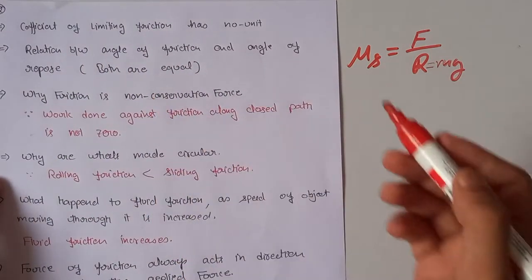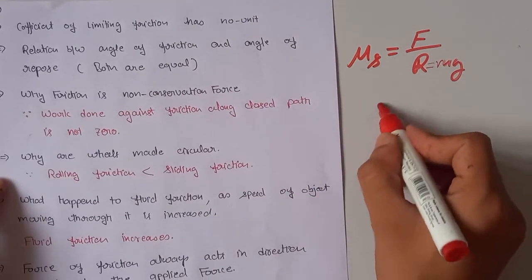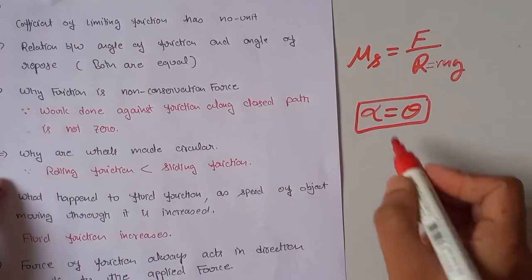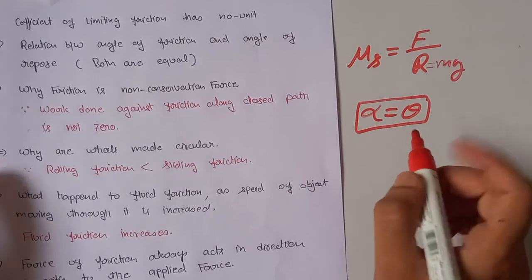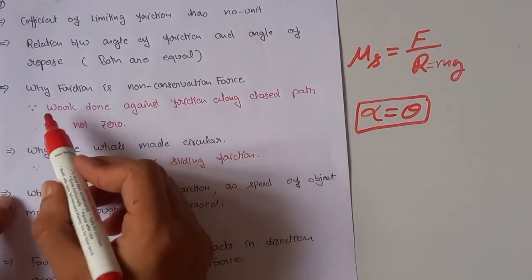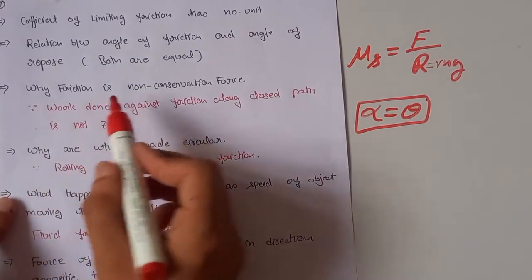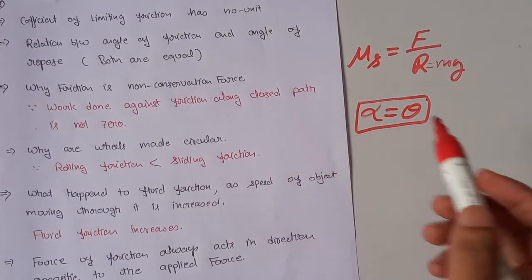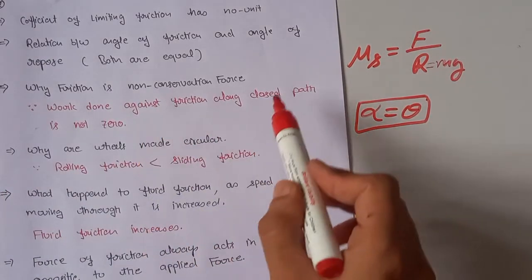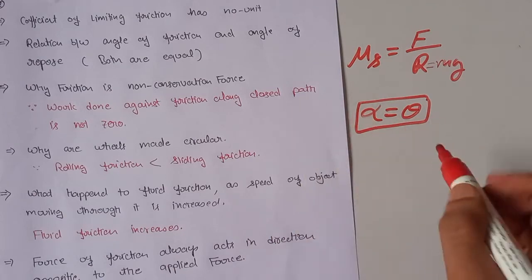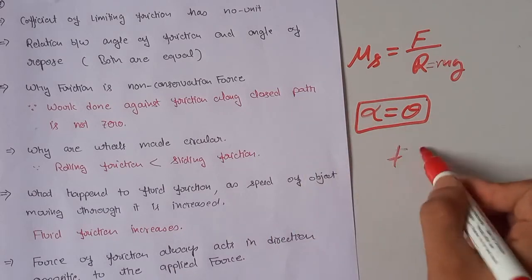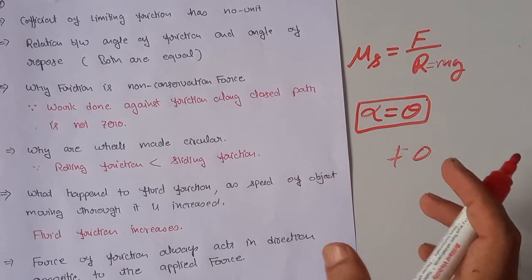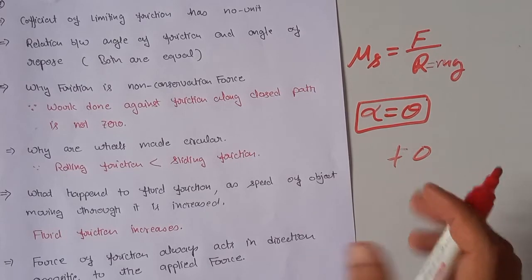The relation between angle of friction and angle of repose: both are equal — α = θ. Friction is a non-conservative force because work done against friction along a closed path is not equal to zero.